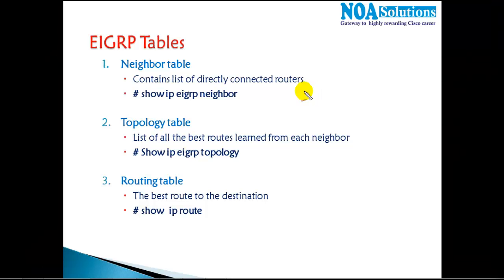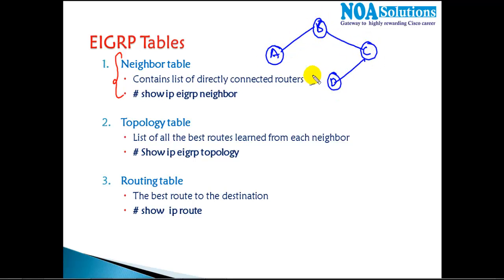The EIGRP neighbor table contains a list of directly connected routers. For example, if Router A is connected to Router B, Router C, and Router D — and I run 'show IP EIGRP neighbors' on Router A — I see two neighbors. Neighbor means the directly connected routers. If I run the same command on Router C, I also see two neighbors — not Router A, because Router A is not directly connected to Router C.